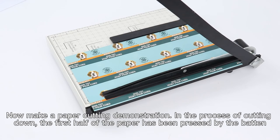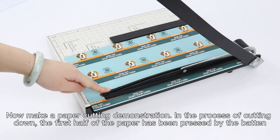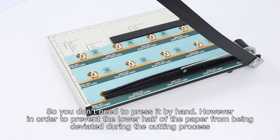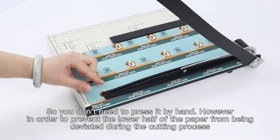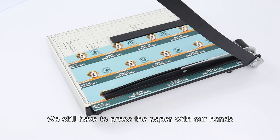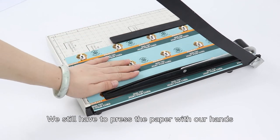Now make a paper cutting demonstration. In the process of cutting down, the first half of the paper has been pressed by the baton, so you don't need to press it by hand. However, in order to prevent the lower half of the paper from being deviated during the cutting process, we still have to press the paper with our hand.